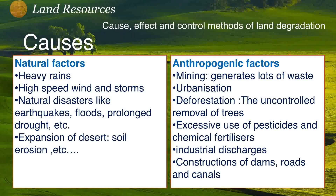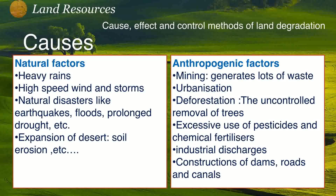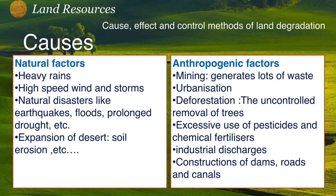There are two types of causes of land degradation: natural factors and anthropogenic factors. Natural factors include heavy rains, high-speed winds and storms, natural disasters like earthquakes, floods, prolonged drought, expansion of deserts, and soil erosion. Anthropogenic, or man-made, causes include mining, which generates large amounts of waste, urbanization, deforestation, excessive use of pesticides and fertilizers, industrial discharge, and construction of dams, roads, and canals.